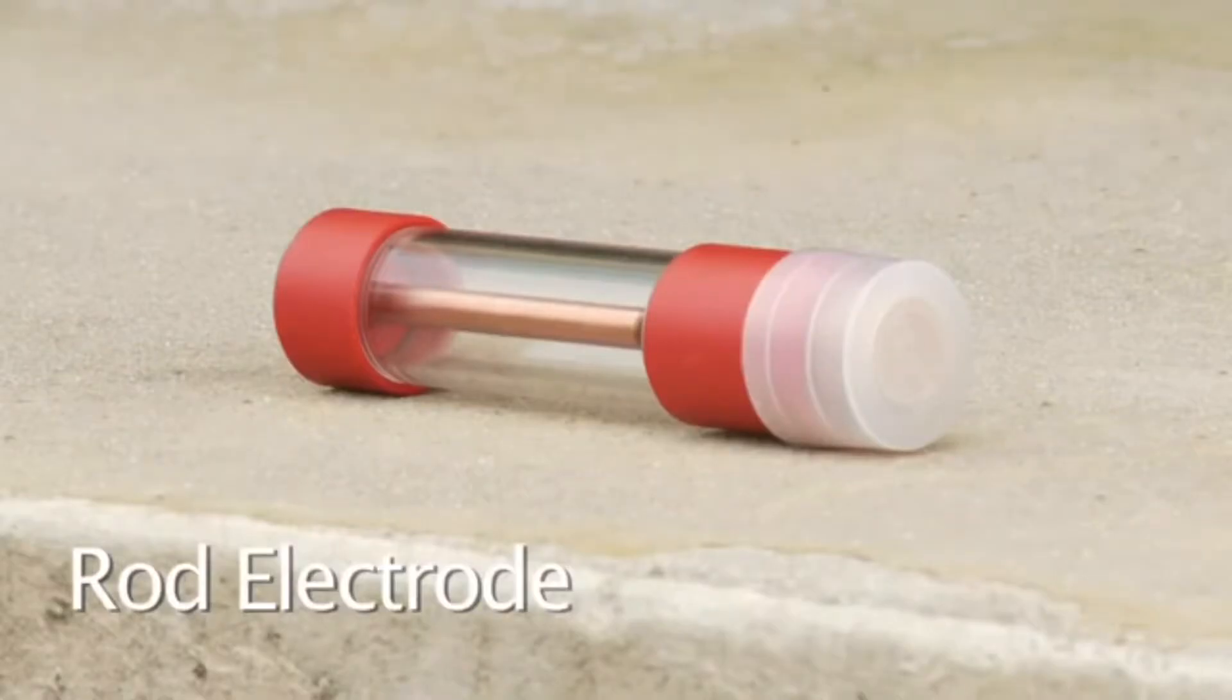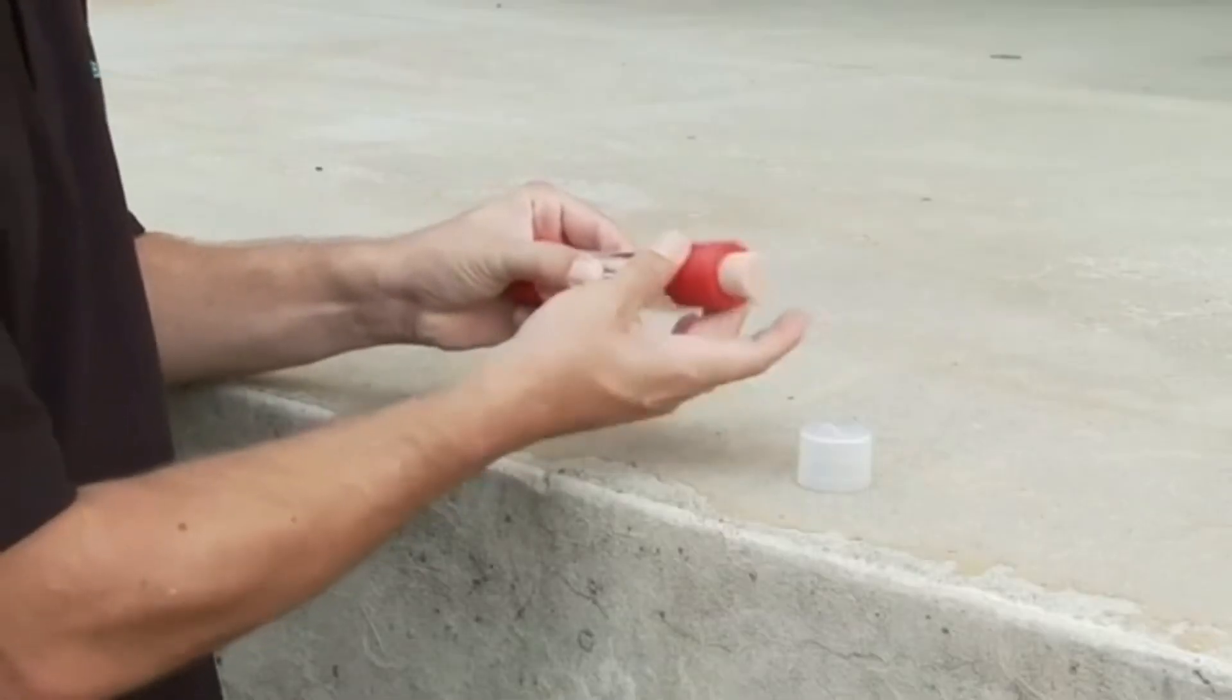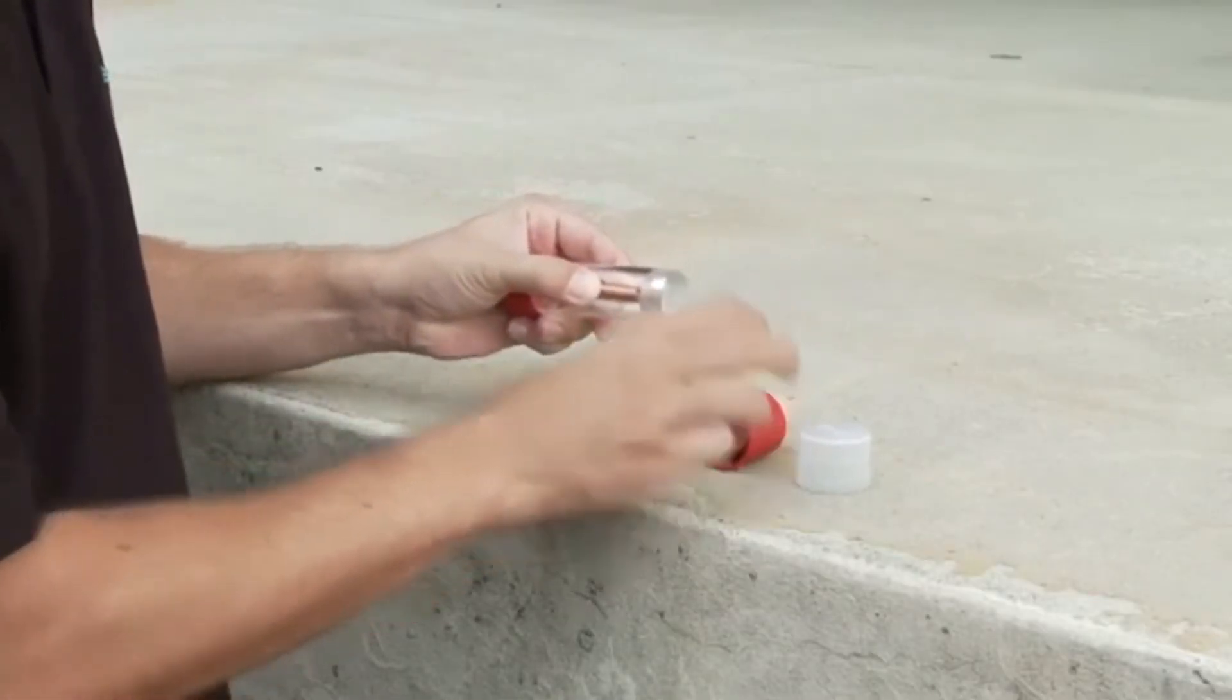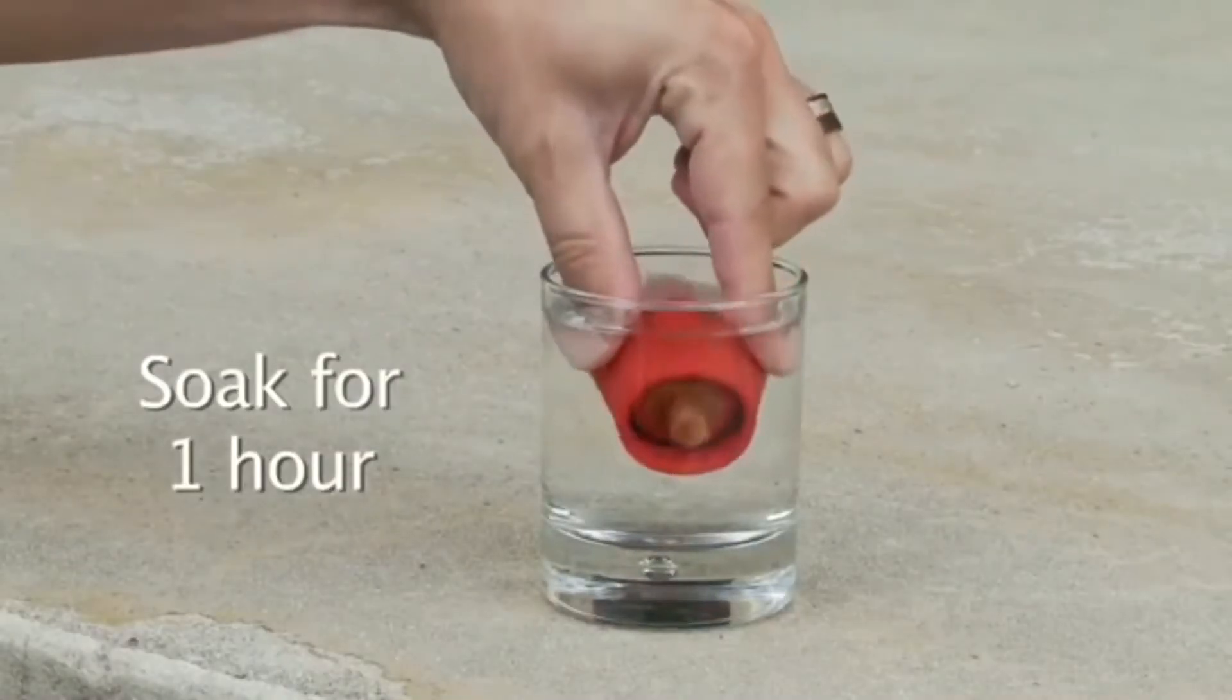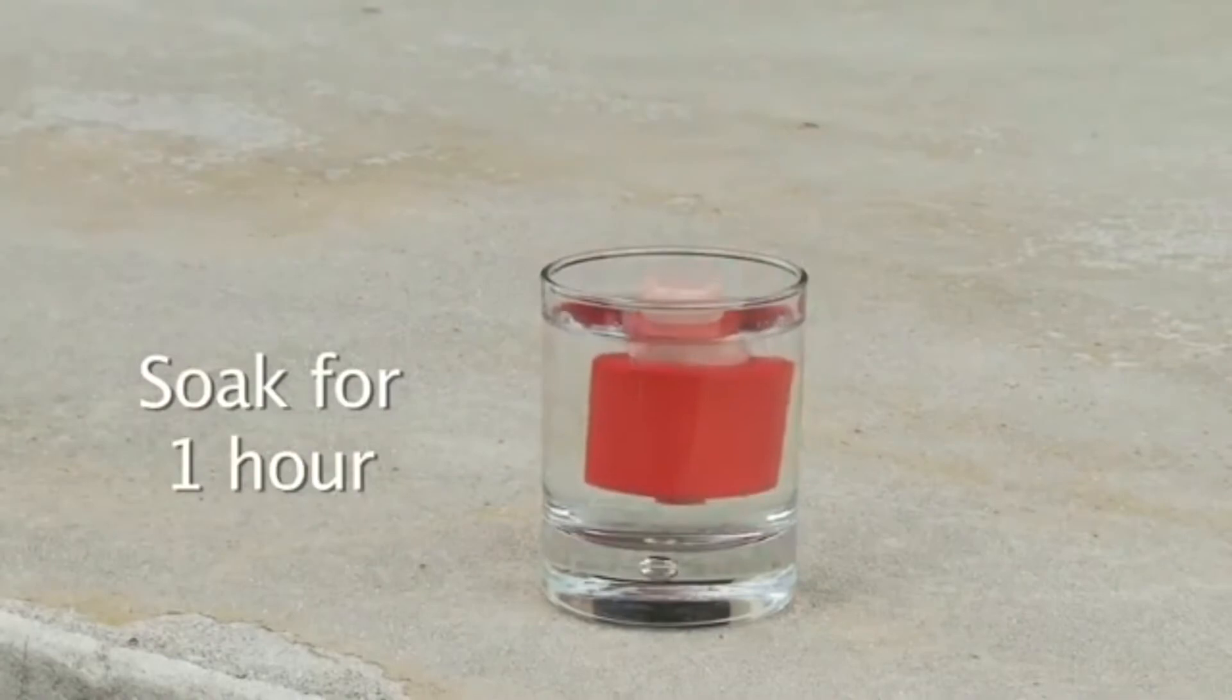Preparing the rod electrode. Before filling, remove the cap with the wooden plug and soak it in water for about an hour to allow the wood to saturate and swell and to ensure a low resistivity contact.